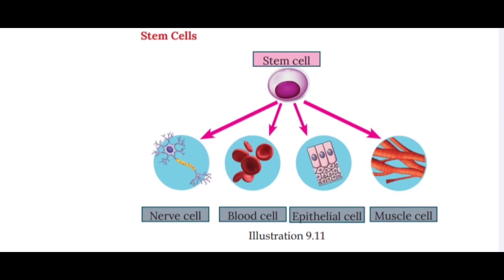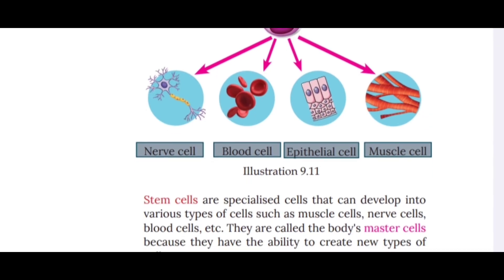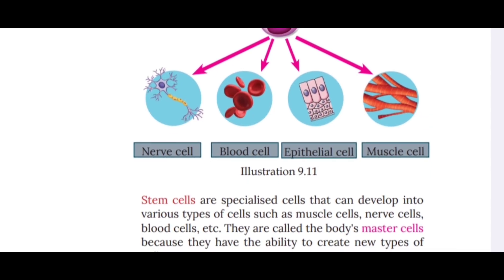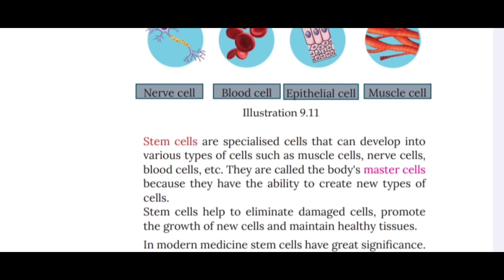Stem cells are specialized cells that can develop into various types of cells such as muscle cells, nerve cells, and blood cells. They are called the body's master cells because they have the ability to create new types of cells. Stem cells help to eliminate damaged cells, promote the growth of new cells, and maintain healthy tissue.